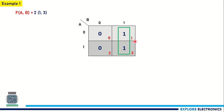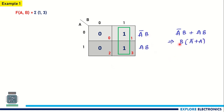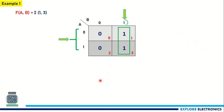We must group only 2^n cells and not 3 adjacent cells. Cell 1 corresponds to A̅B and cell 3 corresponds to AB. Taking A̅B + AB, B is common and A̅ + A = 1, so the final expression is B. Using the simpler approach: in this group B is 1, and A changes from 0 to 1 — since A is not constant, we ignore it. So the final expression is B.